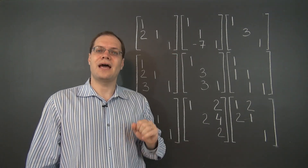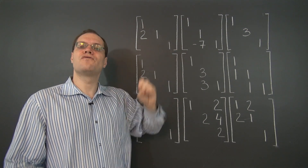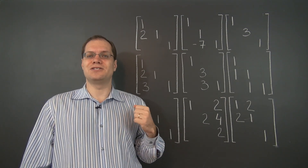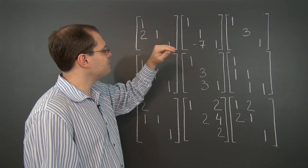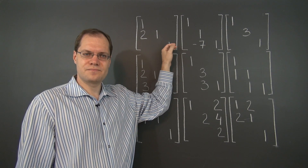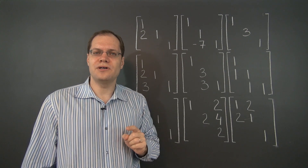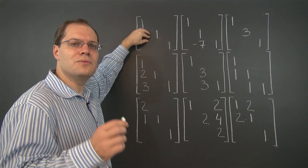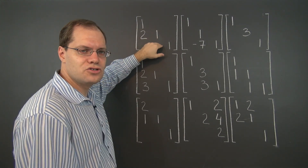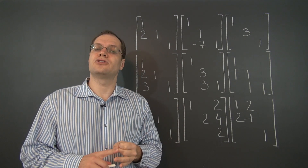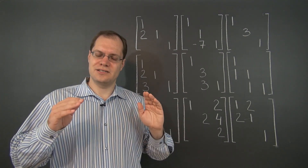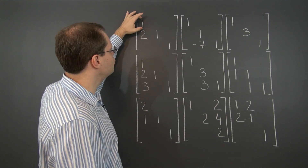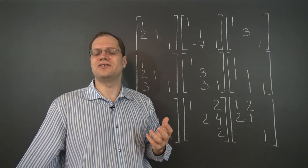Let's look at the first one and answer the question: how can this matrix be obtained by row operations and by column operations? It's always two different perspectives on the same matrix — it has to be elementary from both points of view. Starting with the identity matrix, the row operation that yields this matrix is: add two of row one to row two. So this matrix is elementary.